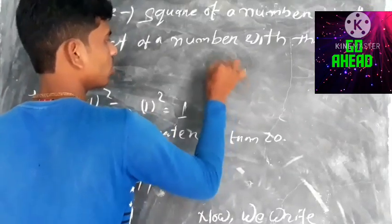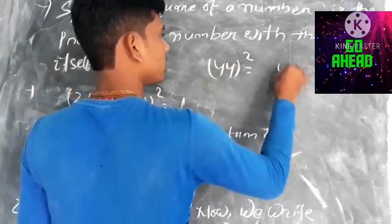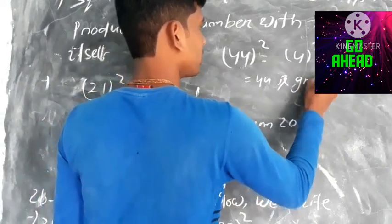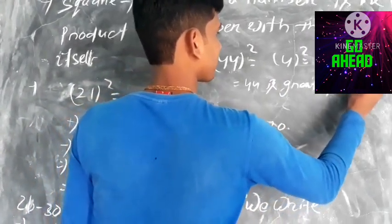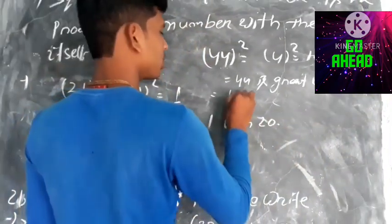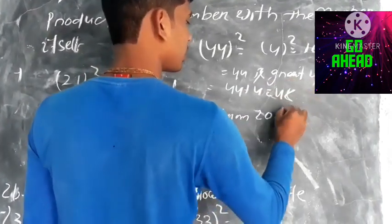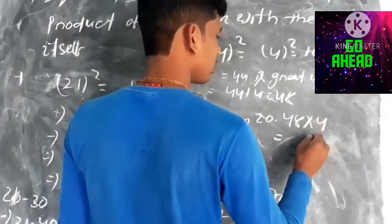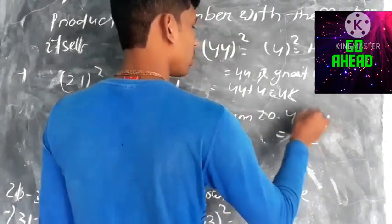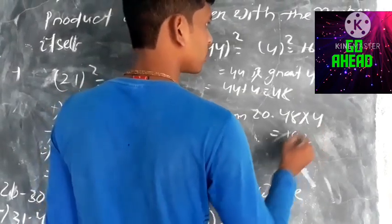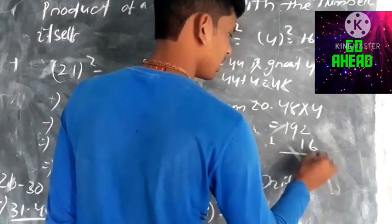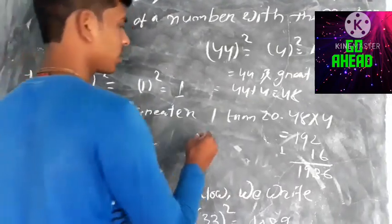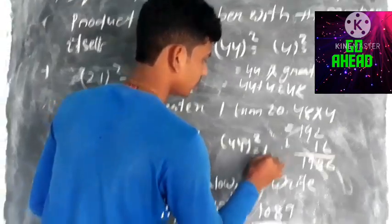Suppose we go to 44². It is the same procedure. 4² = 16. Then 44 is greater than 40 by 4. So 44 + 4 = 48. Multiply 48 by 4 = 192. The last digits from 16 are added: the square of 44 is 1936.